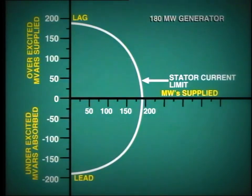Clearly, in order to keep within the MVA rating, we must reduce megawatt output if we wish to produce a large output of VARs with the generator.